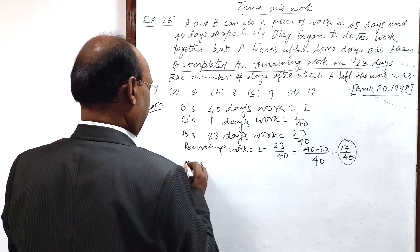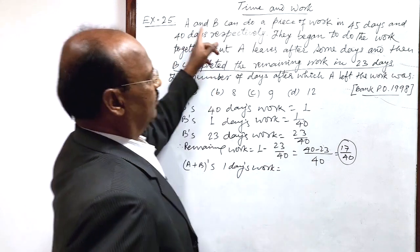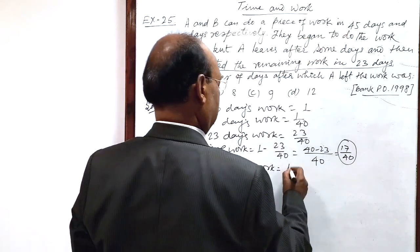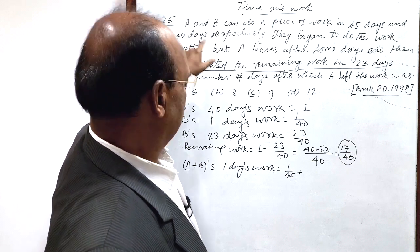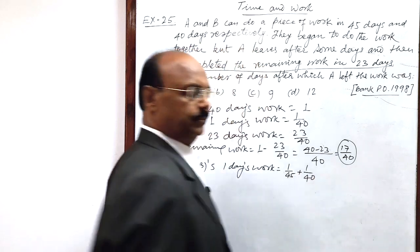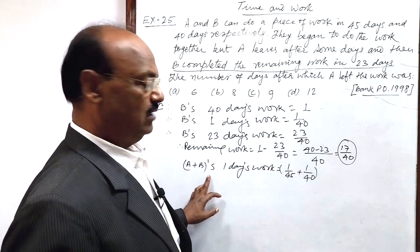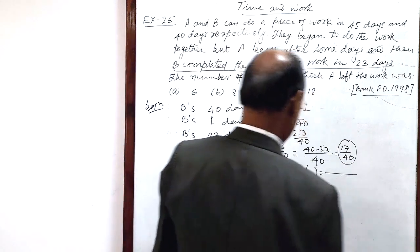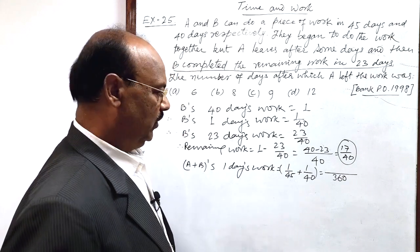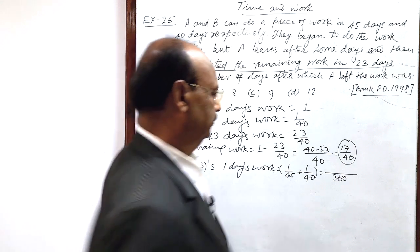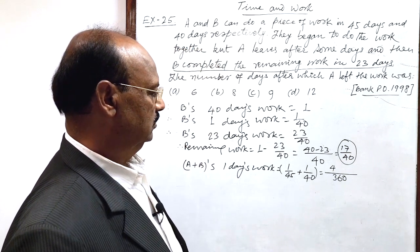What is the amount of work done by A and B in one day? That we will calculate now. Here A plus B's 1 day's work is equal to A completes the work in 45 days, so 1 day's of A is 1 by 45. Similarly, B completes the work in 40 days, so work done by B in one day is 1 by 40. So this much work has been done by A plus B when both are working together in one day. Let us find the sum of these two figures, these two numbers. Here LCM is 360 and in numerator 4, is it 4? No.